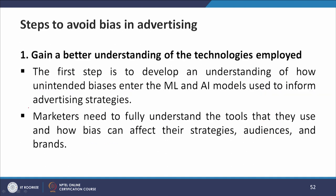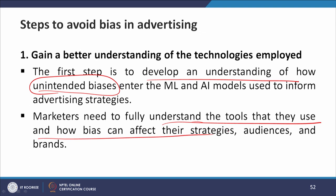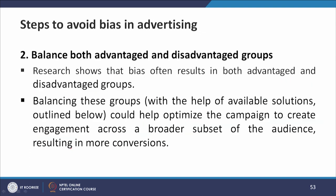How do we avoid biases in advertising? The first step is to gain a better understanding of the technology employed — specifically, to develop an understanding of how unintended biases enter the machine learning and AI models used to inform advertising strategies. Marketers need to fully understand the tools they use and how biases can affect their strategy, audiences, and brands. The second step is to balance both advantaged and disadvantaged groups. Research shows that biases often result in disparities between these groups. Balancing them with available solutions could help optimize campaigns to create engagement across a broader subset of the audience, resulting in more conversions.